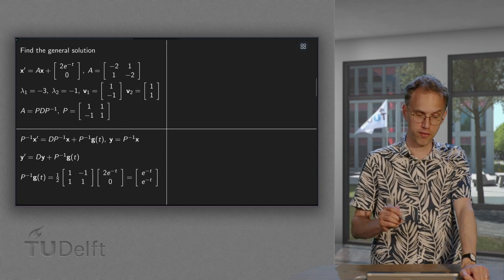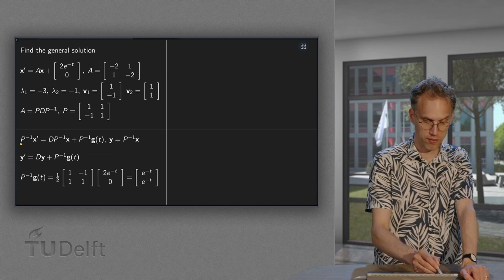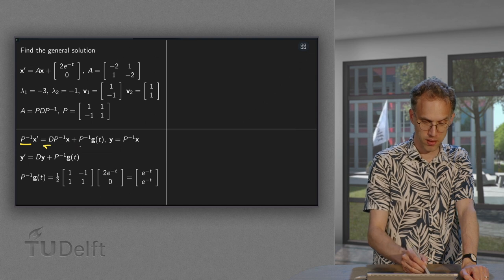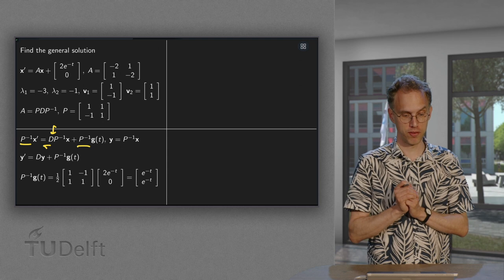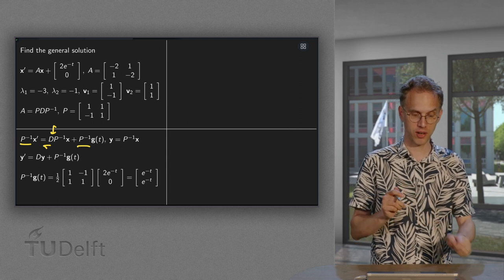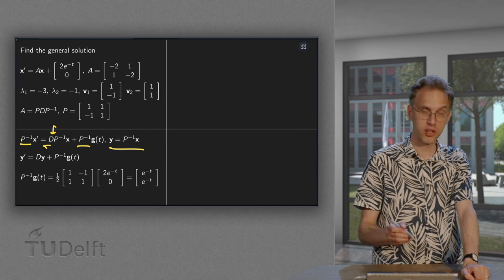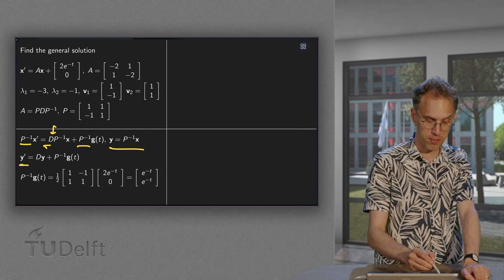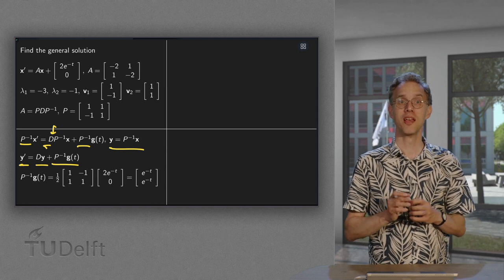Well, we do our familiar trick. We have x' equals Ax plus g, so put the P inverse everywhere here. Here we have PDP inverse, so the P inverse and the P cancel each other. You set again y equals P inverse times x, so your problem becomes y' equals D times y plus P inverse times g(t). Now, first of all we need to determine P inverse times g(t).